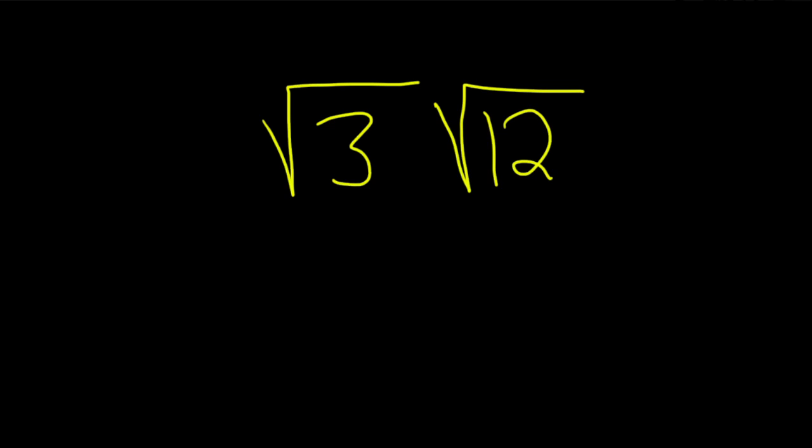Hi, in this problem we are going to multiply the square root of 3 times the square root of 12. So one way to do this is to just multiply straight across because they're both square roots. We are allowed to do that.